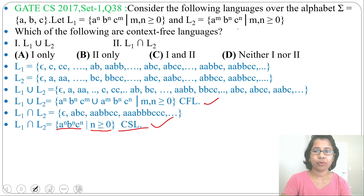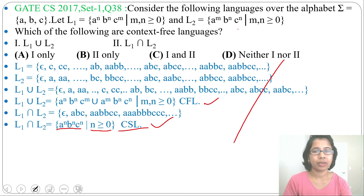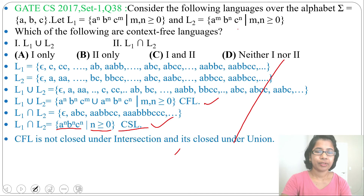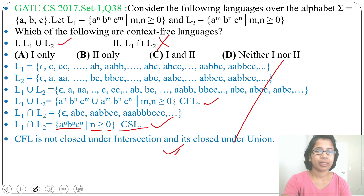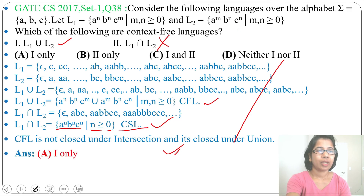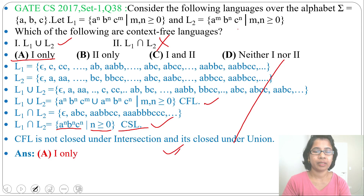If you know closure properties, you don't need to do all this analysis. According to closure properties, context-free languages are closed under union but not under intersection. So the union of two context-free languages is context-free, while the intersection of two context-free languages is not necessarily context-free — it will be context-sensitive. So just from closure properties, L1 ∪ L2 is context-free and L1 ∩ L2 is not. The answer is option A: one only.